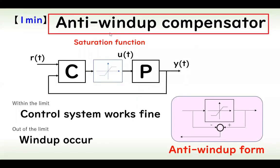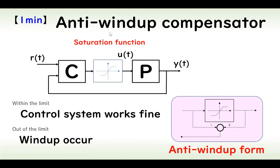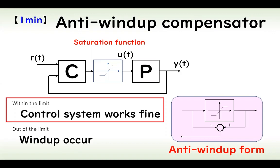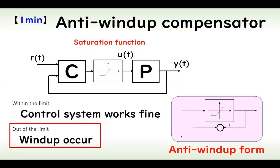An anti-windup compensator addresses control systems with saturation, where the saturation function limits the control input. When the control input is within the limit, the control system works fine. When the signal exceeds the limit, windup occurs, so an anti-windup form is incorporated to handle the saturation effect.